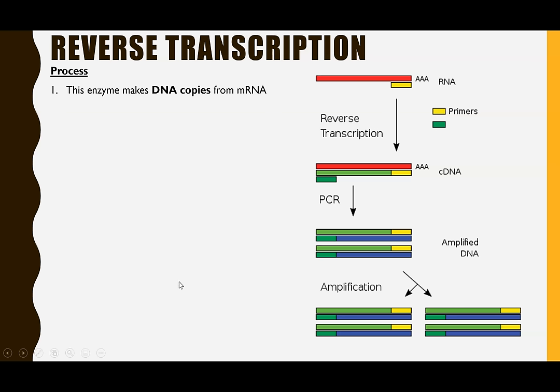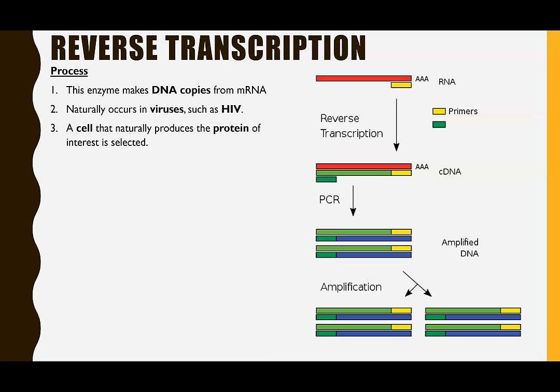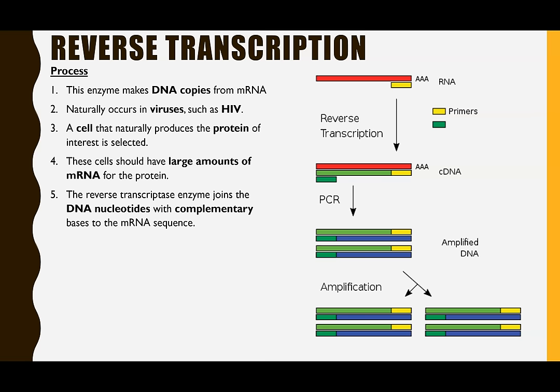Starting with reverse transcription — this uses the enzyme reverse transcriptase, which can make DNA copies from mRNA. It naturally occurs in viruses such as HIV. A cell that naturally produces the protein of interest is selected; using the human insulin example, pancreatic cells produce that particular protein. These cells must make large amounts of the mRNA for that protein. The reverse transcriptase enzyme then joins DNA nucleotides together which are complementary to the bases on the mRNA sequence.